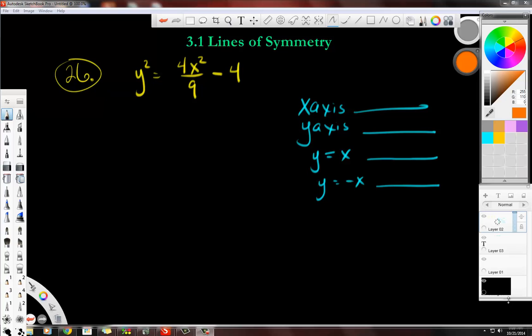This is a new style of problem where we have to figure out, you know, is this x symmetrical to the x-axis, y-axis, and then these two lines, y equals x and y equals negative x, to see if they're symmetric or not to that.